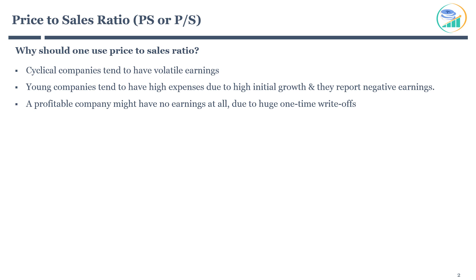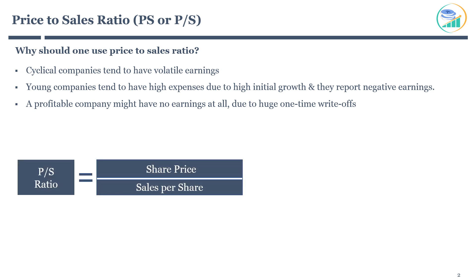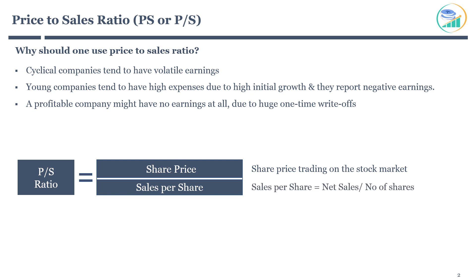This ratio compares the stock price of the company with the company's sales per share. Price-to-sales ratio is calculated as the company's share price divided by sales per share. Share price is obtained from the stock market. Sales per share is calculated as net sales from the income statement divided by the number of shares issued by the company.